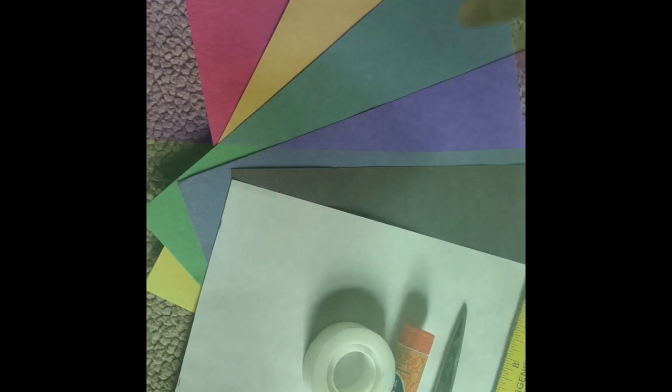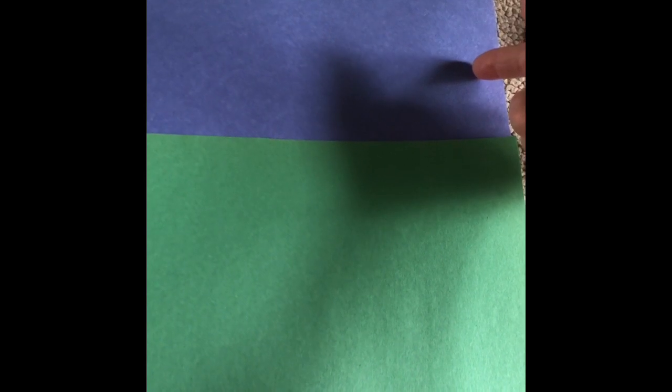Let's get started. The blue construction paper is for the sky, the green is for the grass. You can make the sky and the grass the same size, make one smaller, make one larger, whatever you like. This is the way I'm going to do it because I'm going to fit lots of animals right here.